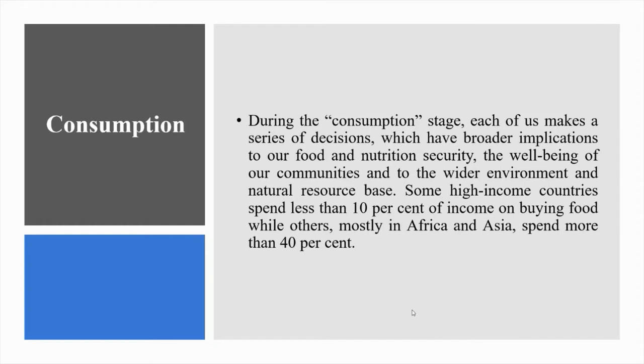The consumption stage. A food system does not only capture how something is grown — it also includes how a food is cooked, eaten and disposed of by consumers. During this consumption stage, each of us makes a series of decisions which have broader implications to our food and nutrition security, the well-being of our communities, and to the wider environment and natural resource base. Some high-income countries spend less than 10% of income on buying food, while others — mostly in Africa and Asia — spend more than 40%. While some countries are facing obesity epidemics, others suffer from the impact of undernutrition.